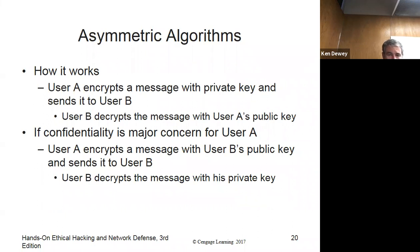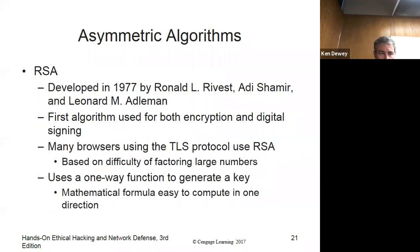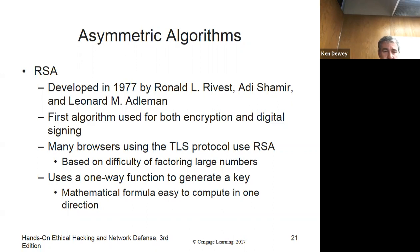User A encrypts a message with a private key and sends it to User B. User B decrypts the message with User A's public key, so they know it came from User A. For confidentiality, encrypt the message with B's public key and B decrypts with their private key. RSA was developed in 1977 by Rivest, Shamir, and Adleman — the first algorithm used for both encryption and digital signatures. Most browsers support TLS and use RSA. It also uses a one-way function to generate a key.